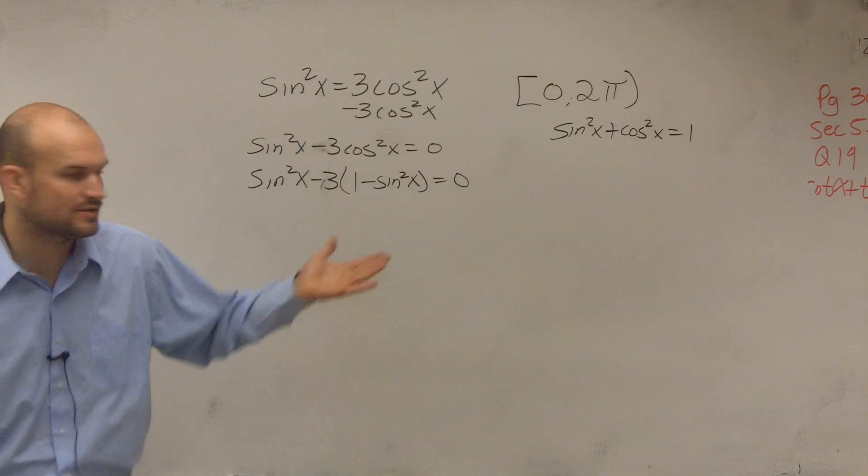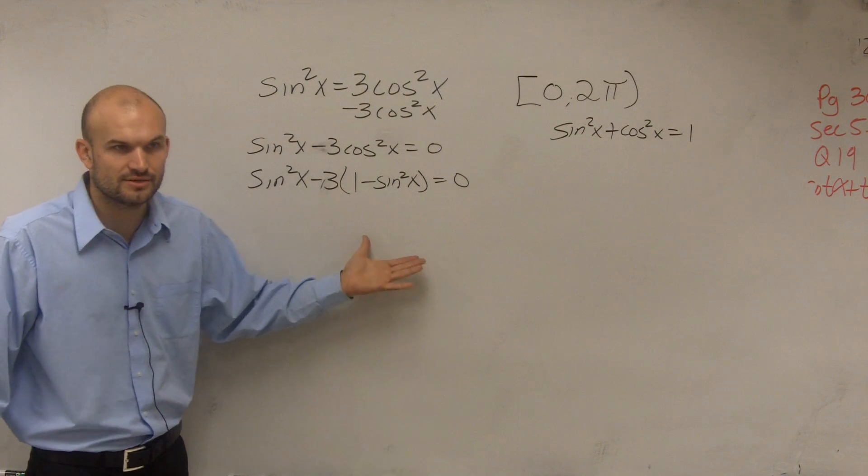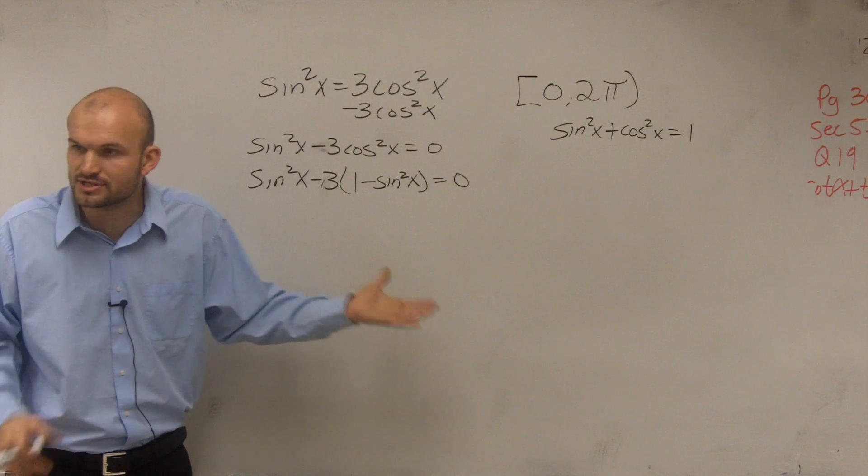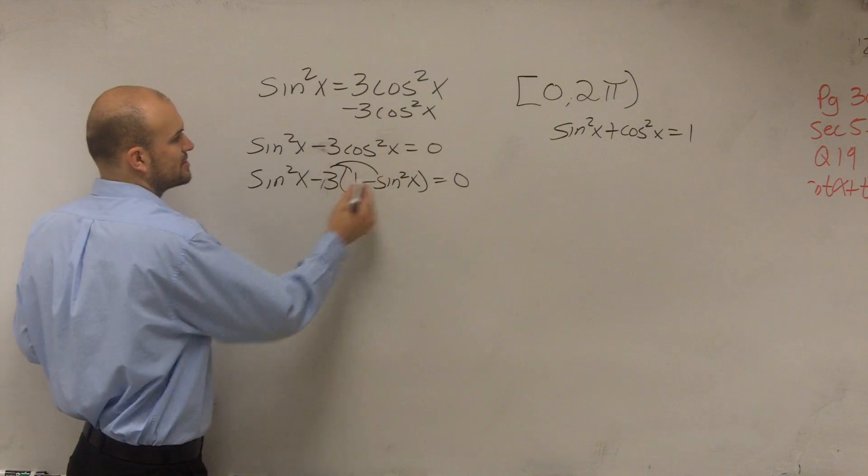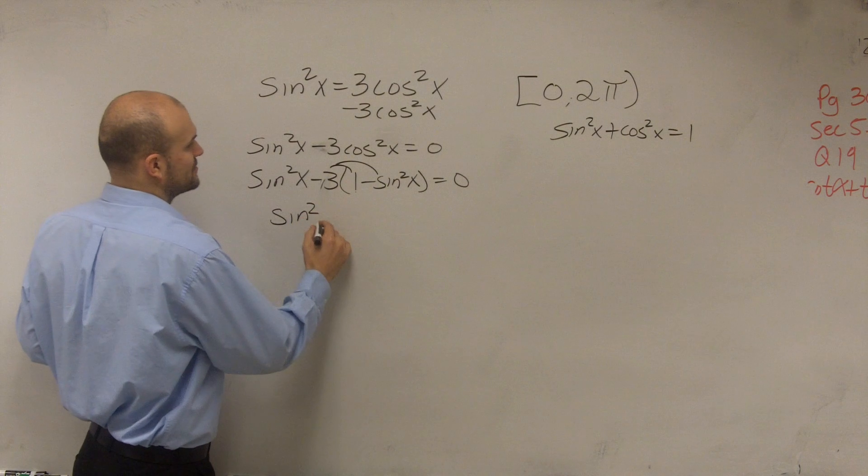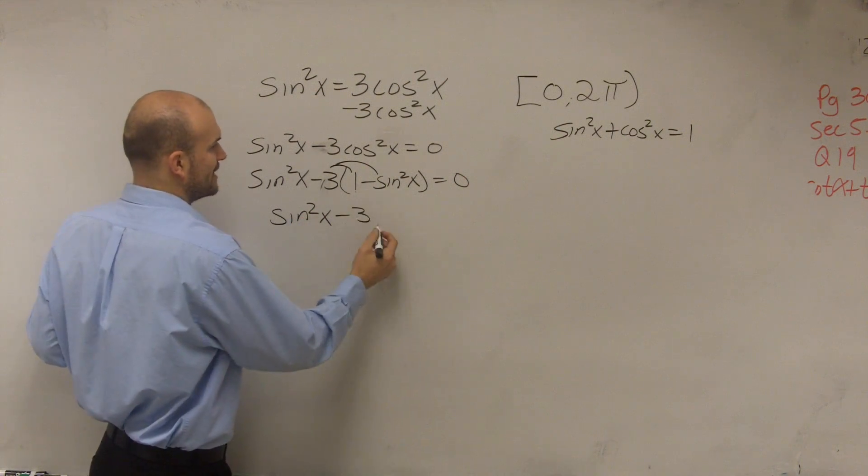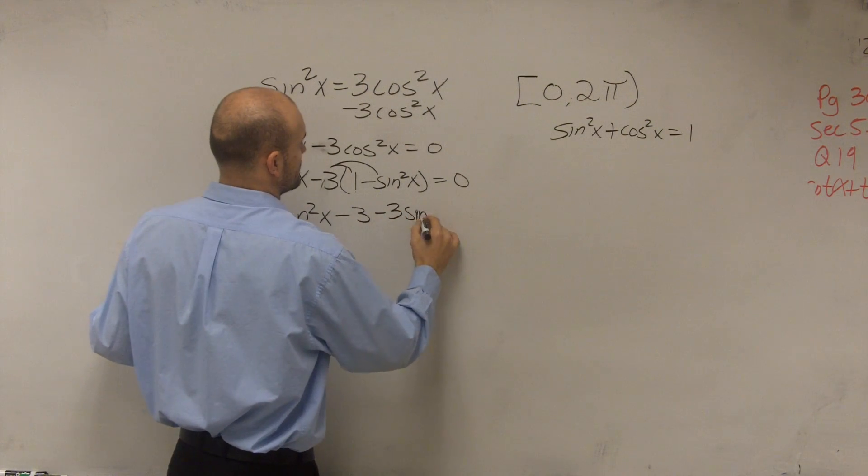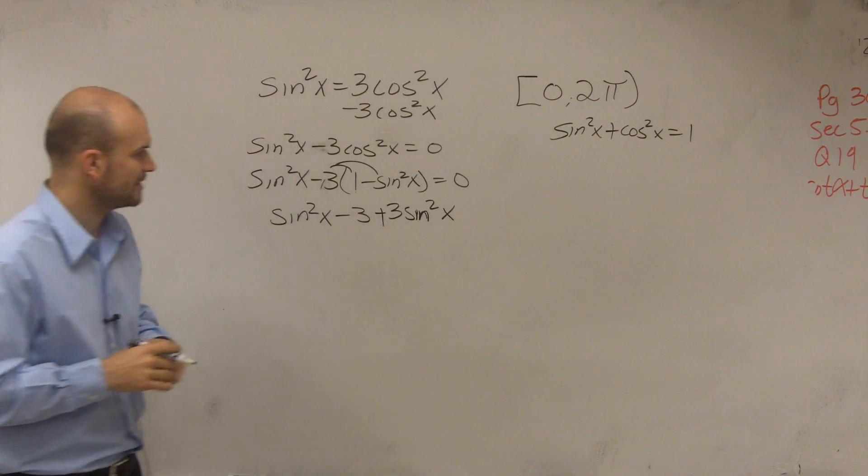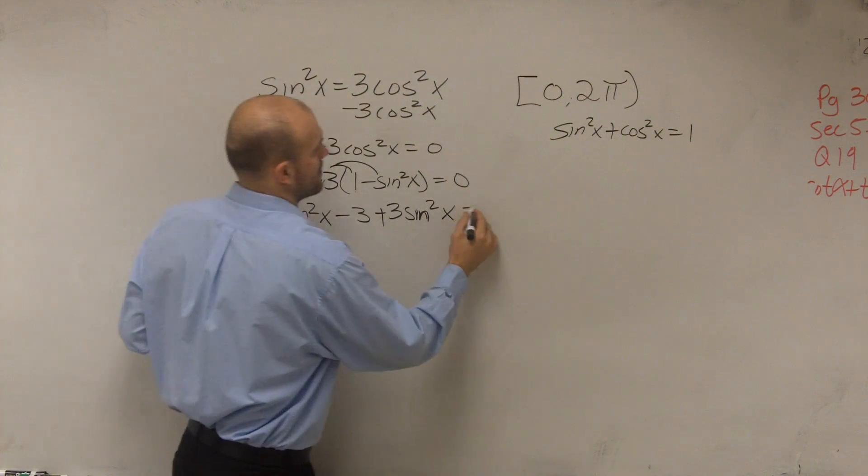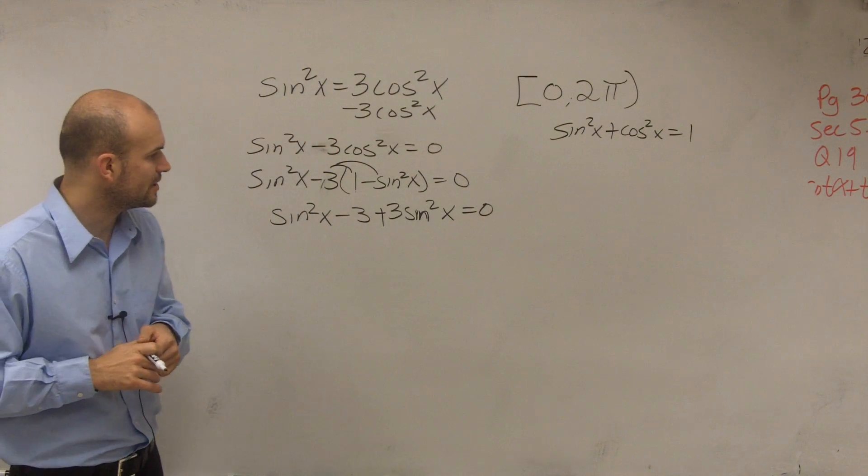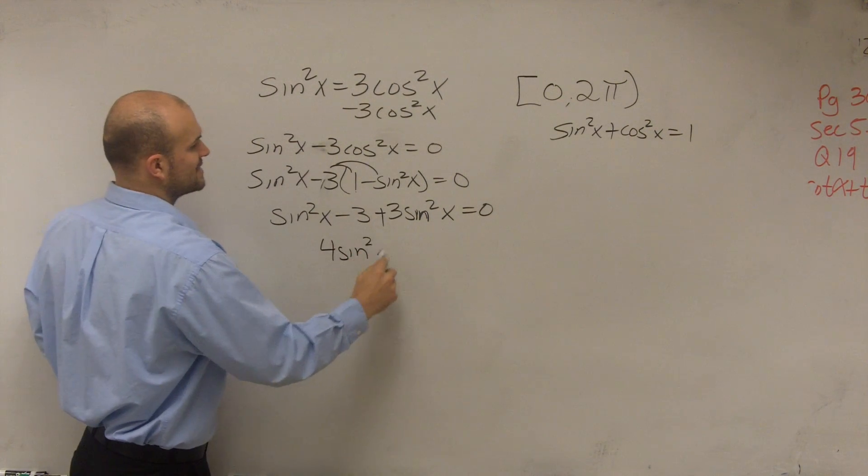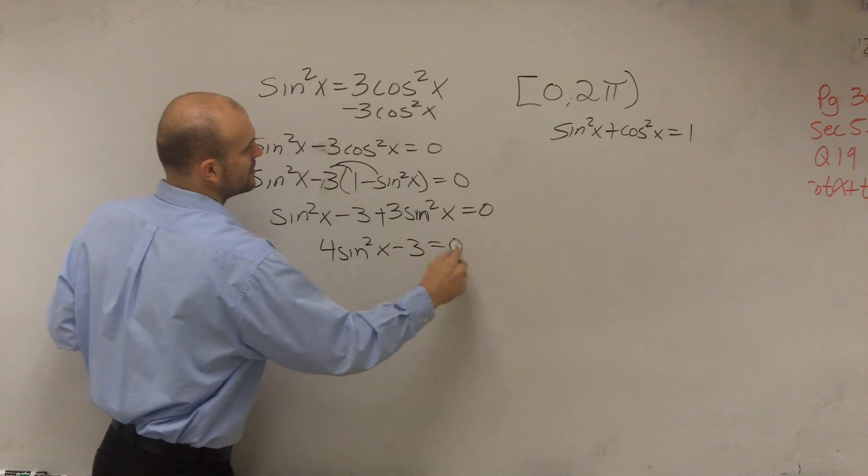The reason why I would do this is you guys see how now I have the same function? You can only evaluate for one function at a time. So now what I'll do is I'll apply this. So I have sine squared of x minus 3 plus 3 sine squared of x equals 0. Then I can combine my like terms. So now I have 4 sine squared of x minus 3 equals 0.